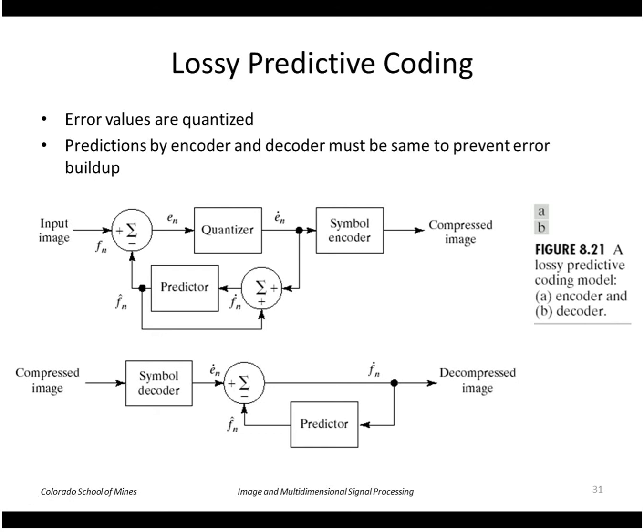Let's look at how to apply the predictive coding method to the case where we have a lossy compression. So here we're going to not send all the exact error values that we got from the predictor, but we're going to quantize them. We're going to discard some of the small ones or maybe represent them using fewer bits.